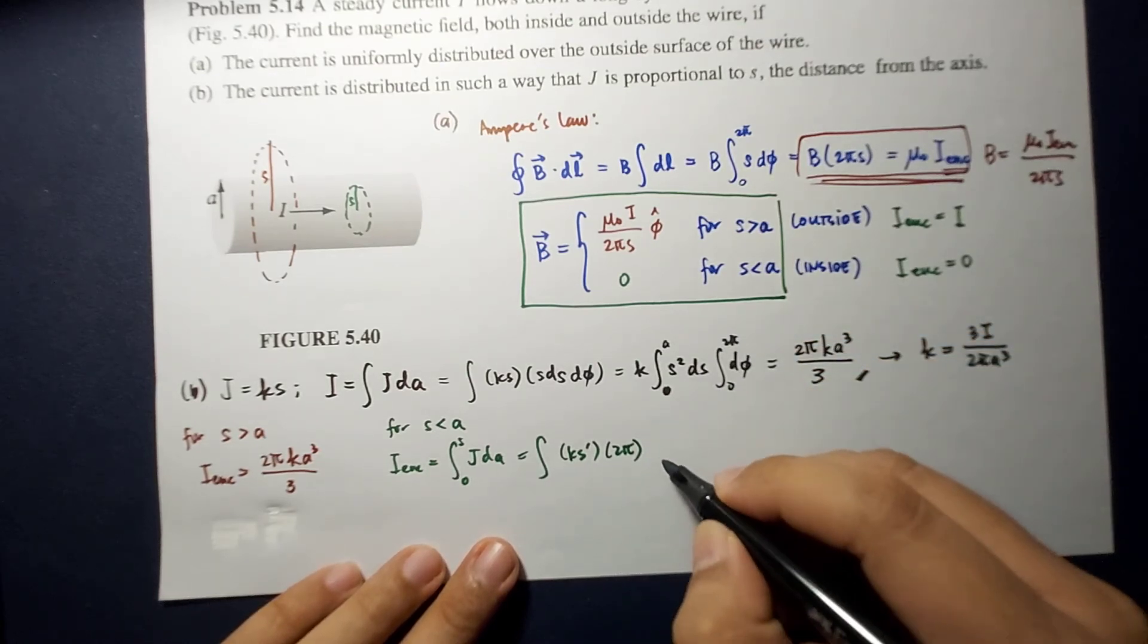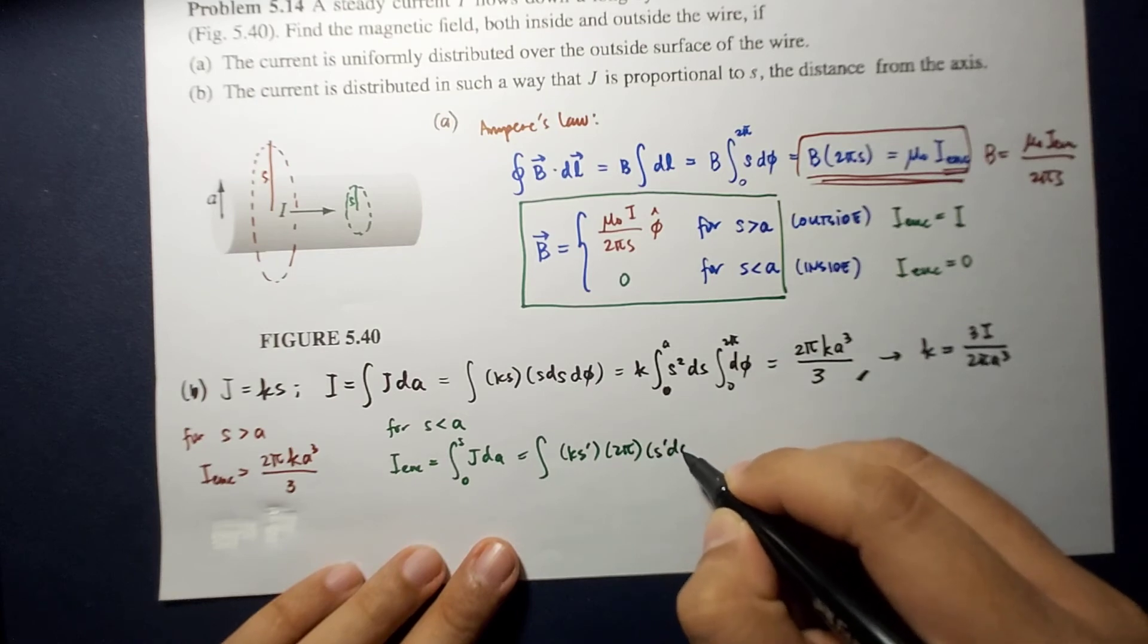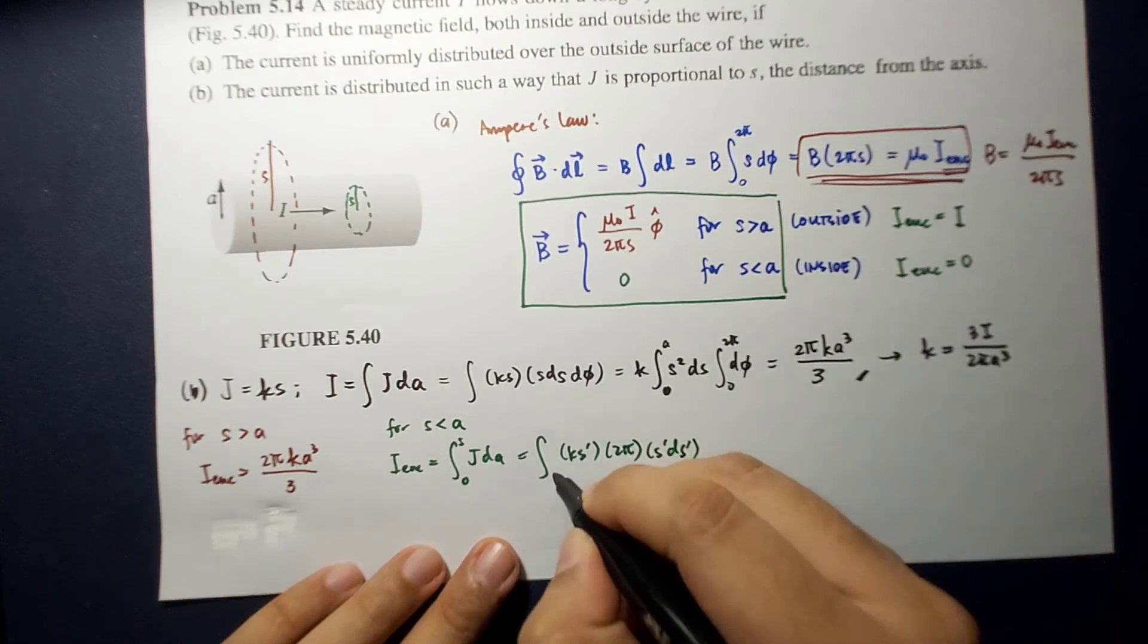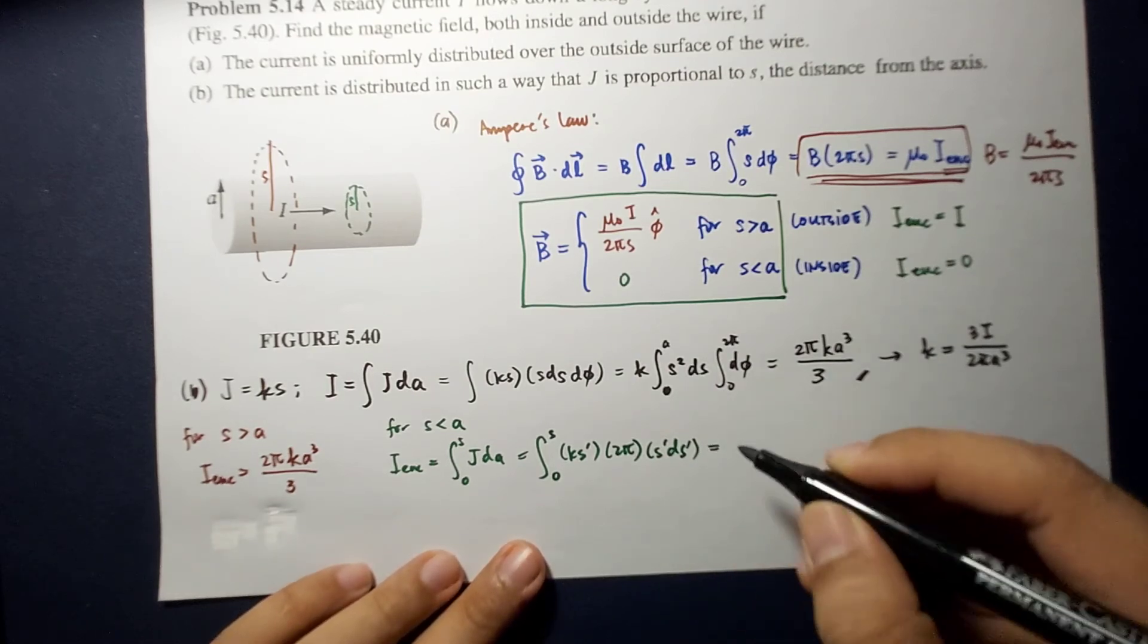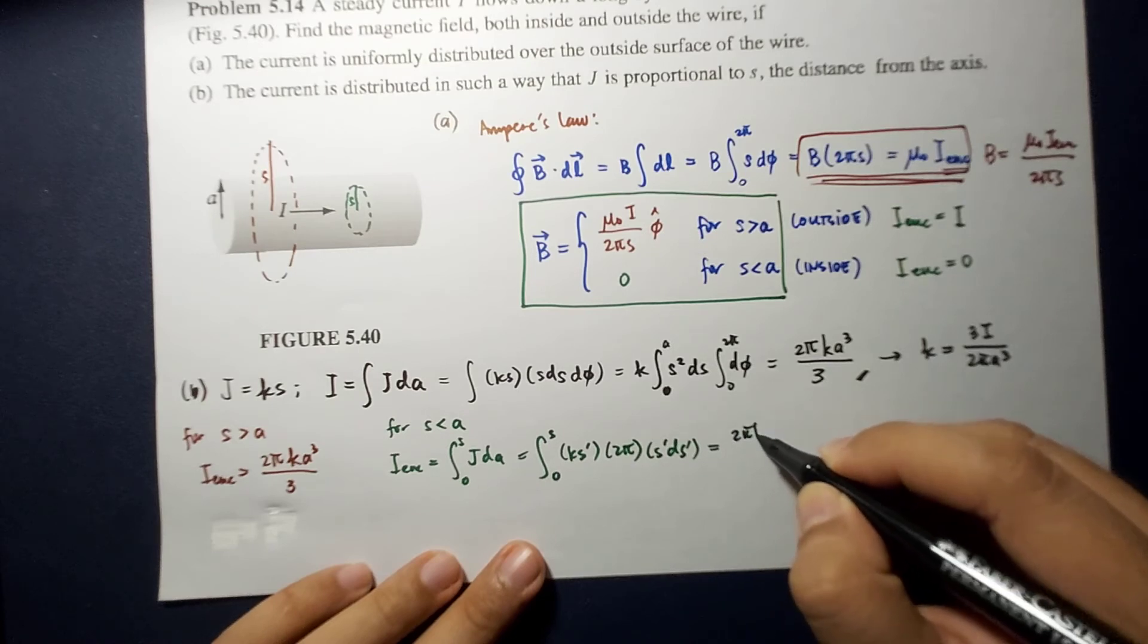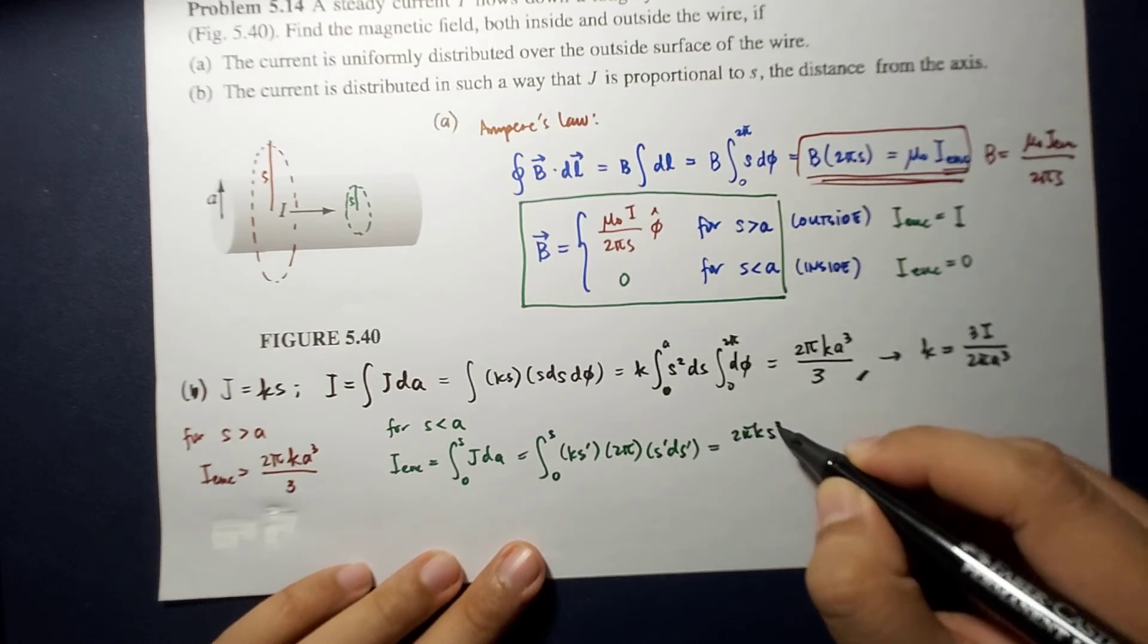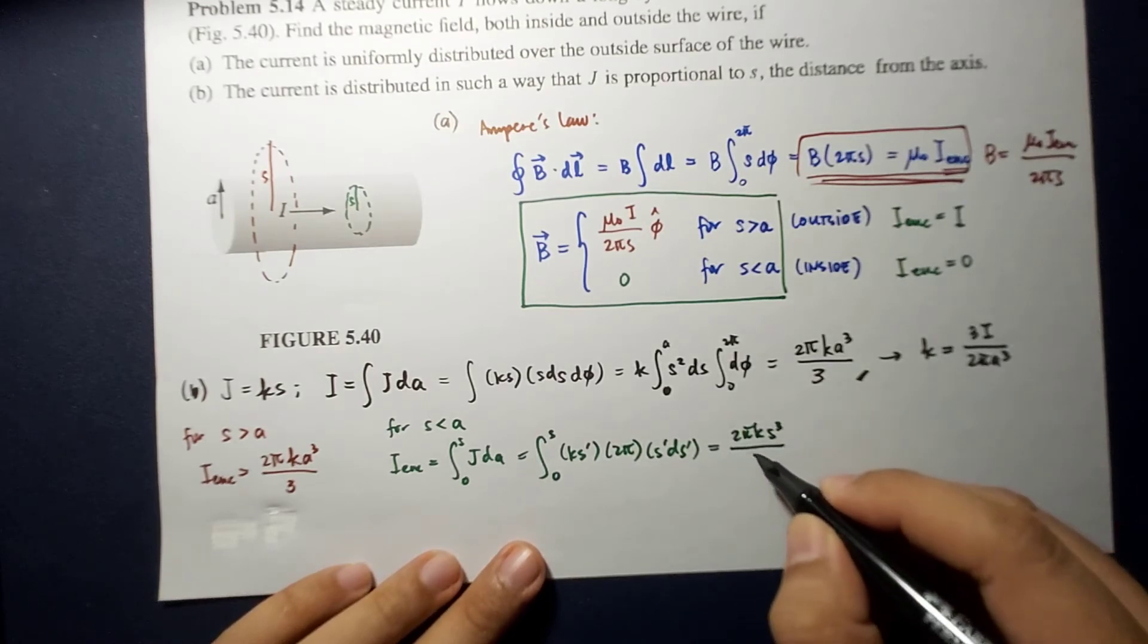K S prime times 2 pi. This 2 pi is coming from here. And then, S prime D S prime. In this case, we are now reduced to integration along S prime.